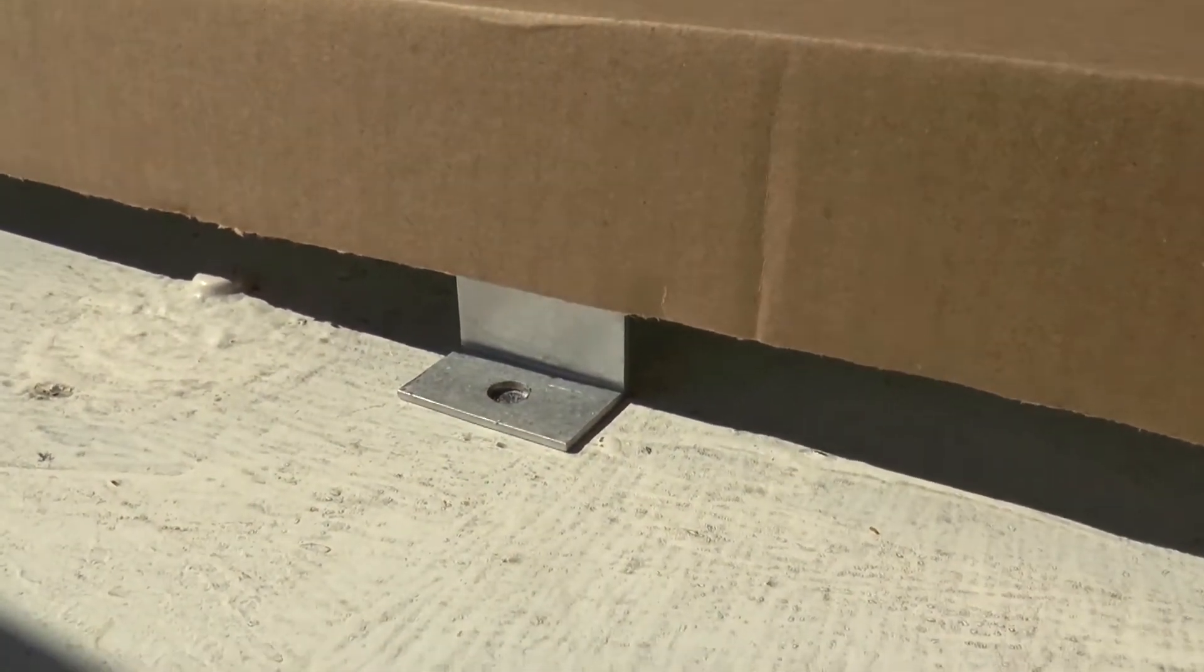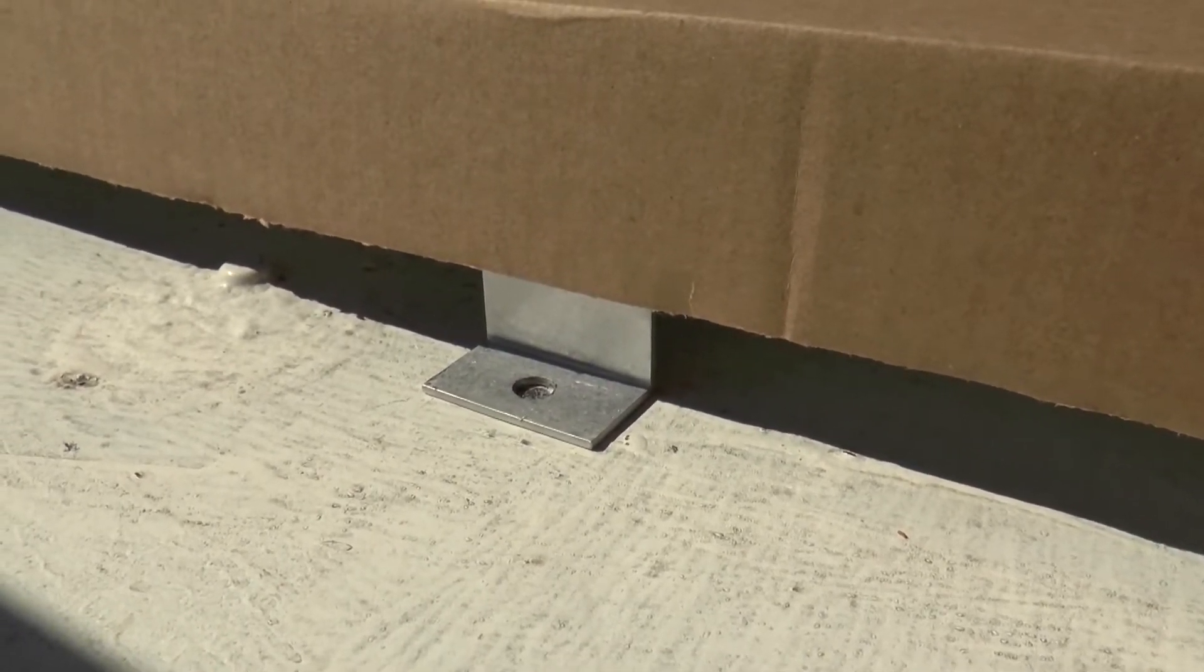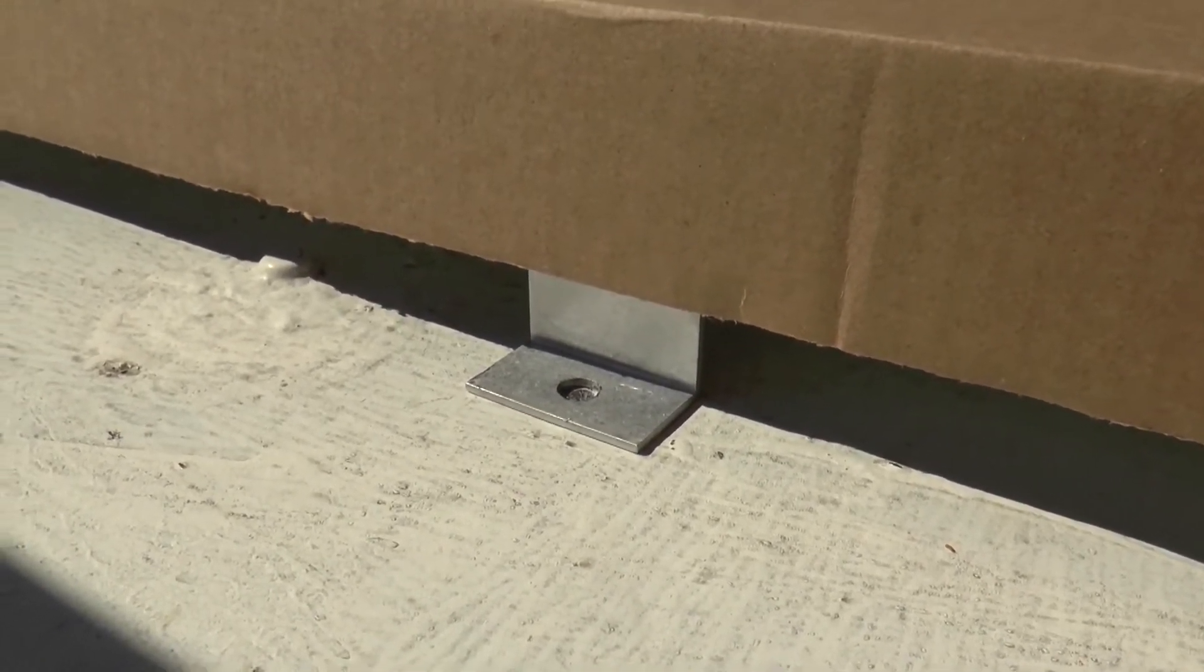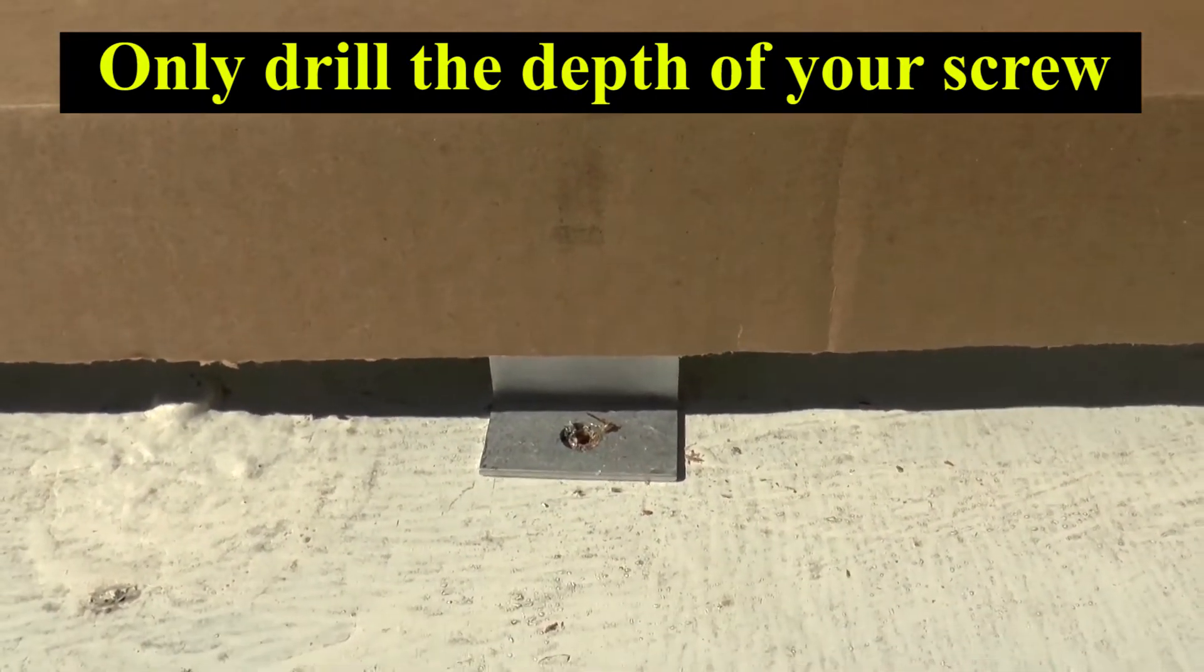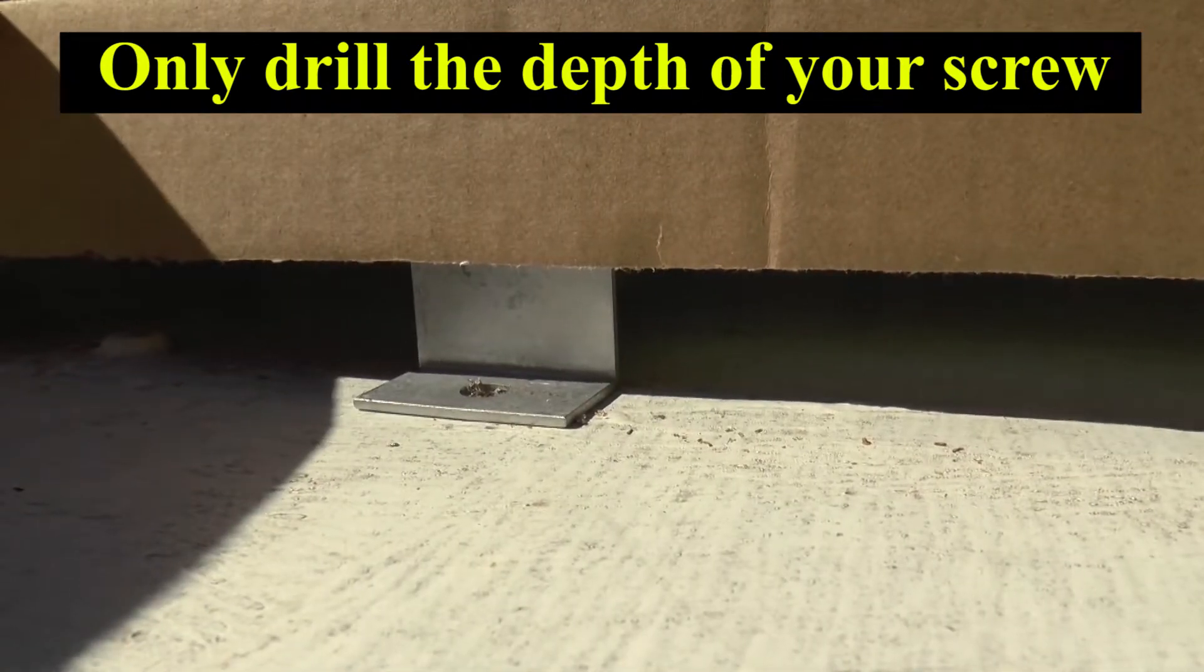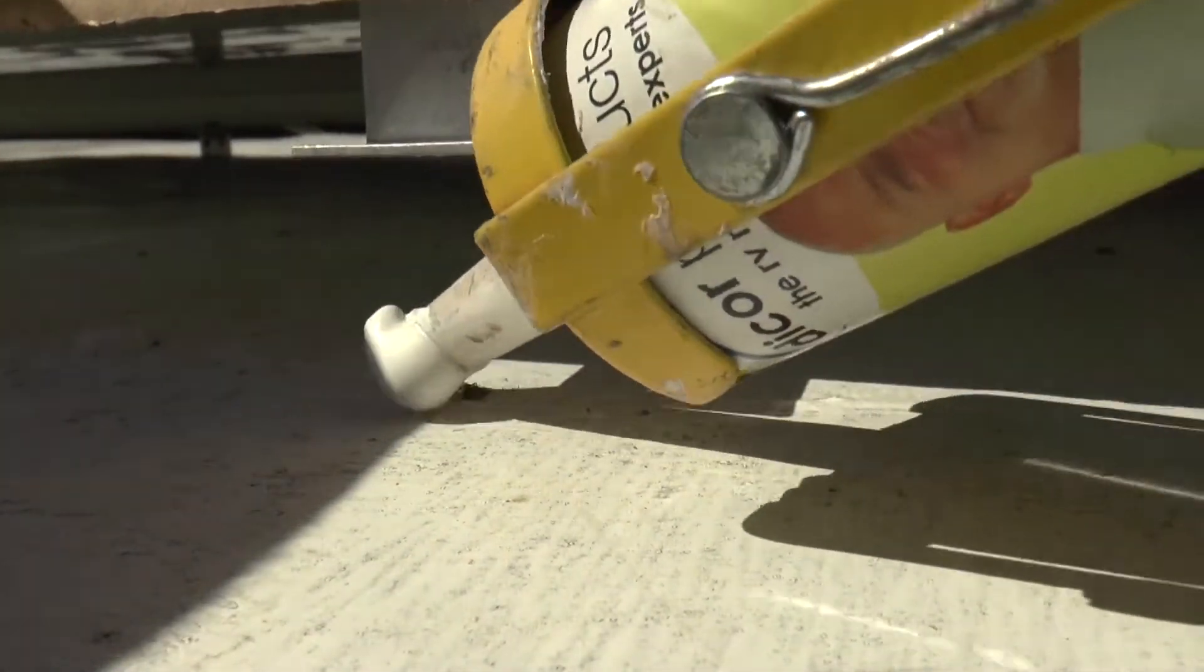So I've found my joists and I've marked all of my holes all the way around my panel. Now what you're going to do after you've marked your holes is you're going to pre-drill these with a little drill bit that's much smaller than the actual screw you're going to be using so that it has plenty to grab onto.